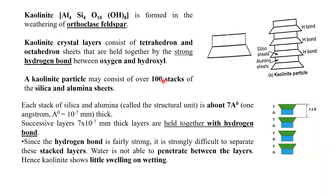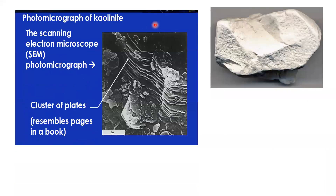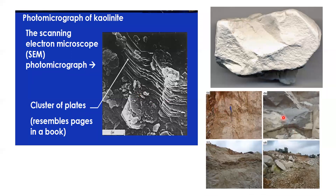Key points: kaolinite has 100 stacks and is called a 1:1 clay mineral because one silica sheet and one gibbsite or brucite sheet are combined. China clay is almost pure kaolinite. Kaolinite minerals can be seen by the naked eye, and under a scanning electron microscope you can see how it forms in layers, like book pages.